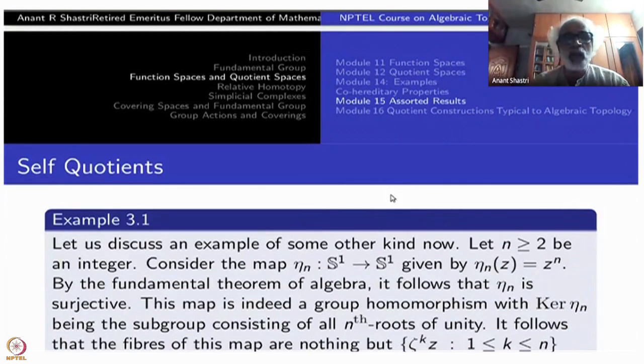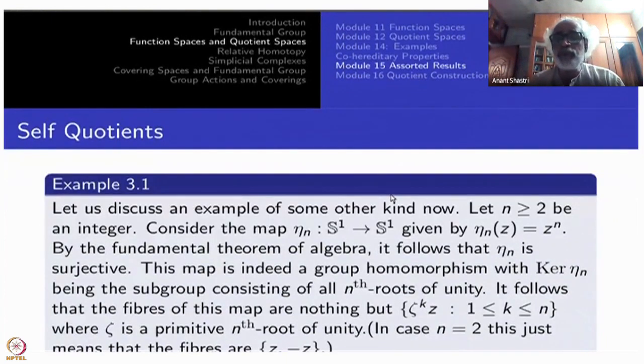For N greater than or equal to 2, look at the map from S^1 to S^1 namely, η_N of Z to Z^N. If N is 1, this is identity map. This is not much interesting. But if you take Z square, Z cube, etc., then you know that the kernel of this map is precisely the nth roots of unity.